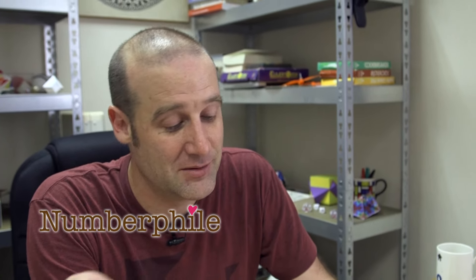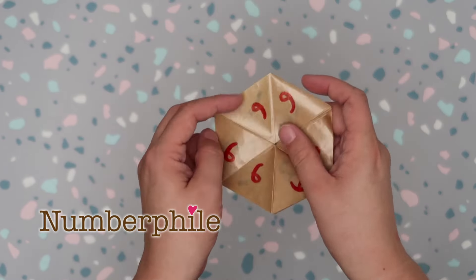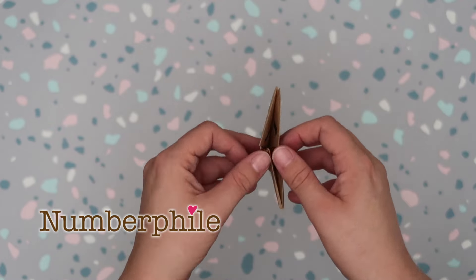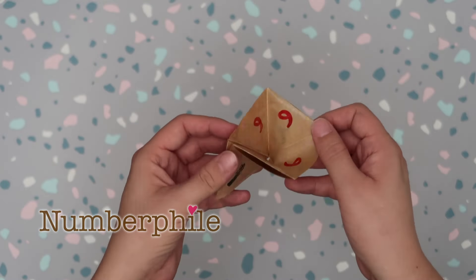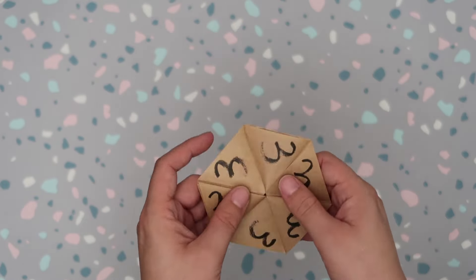Flexagons are a staple of recreational mathematics, but it's always the hexaflexagon that you see, one based on a hexagon with six edges. Someone called Vi Hart has made a whole series of videos about these things.